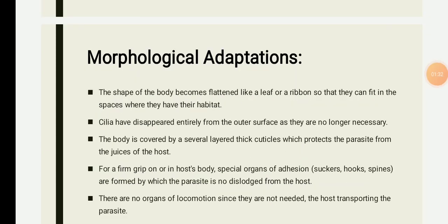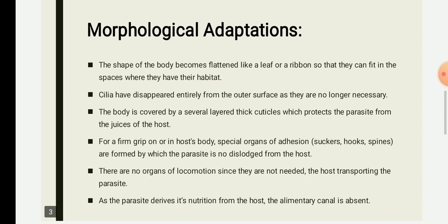Parasitic adaptations can be of two types: Morphological Adaptation and Physiological Adaptation. Morphological adaptation includes the morphological characters that show different adaptations in order to survive in the changing environment.